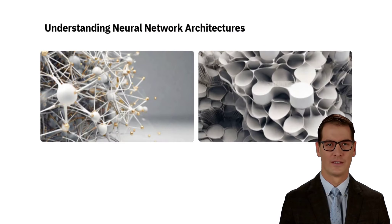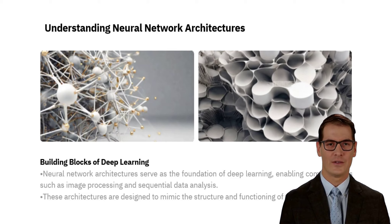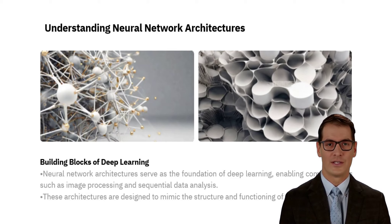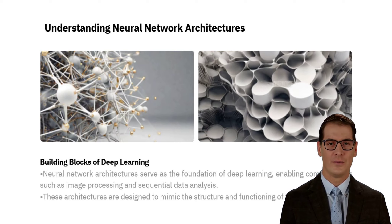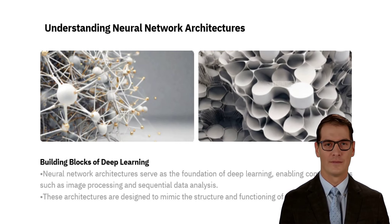Deep learning is a subset of artificial intelligence that utilizes neural networks to grant machines the power to both learn and make decisions. Artificial neurons comprise these neural networks, passing information back and forth among each other, allowing the networks to recognize patterns from data and thereby learn various tasks.